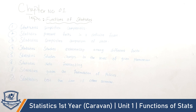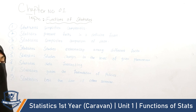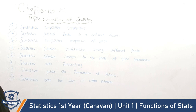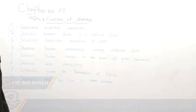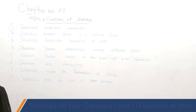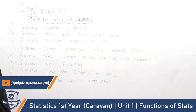The second function is: statistics presents facts in a definite form. For example, consider a statement that in an air crash, many people died. Compare this with a statement that in an air crash, 200 people died. The second statement is more precise information.